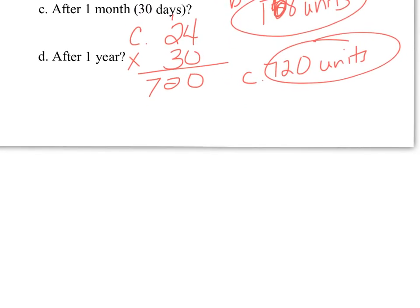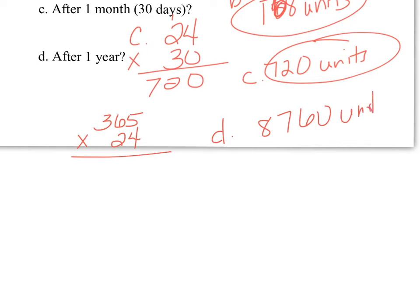For part D, after a year, take 365 days times 24 units per day. Pause the video and practice multiplying by hand. The answer is 8,760 units of POP. All these problems are designed to come out neatly and are easy enough to do without a calculator — make sure you practice without one.